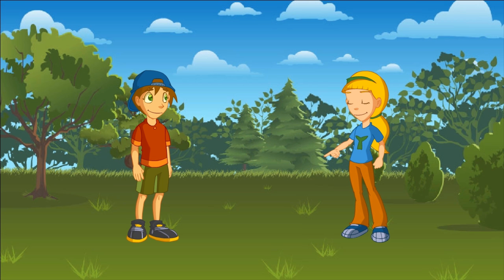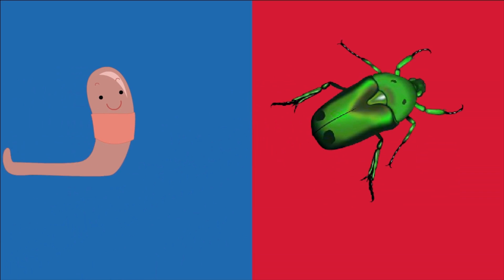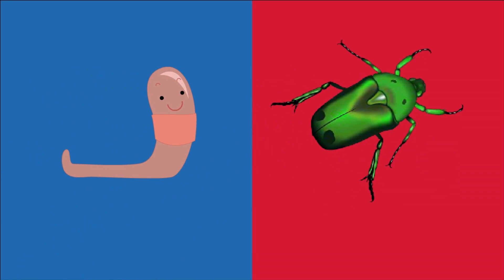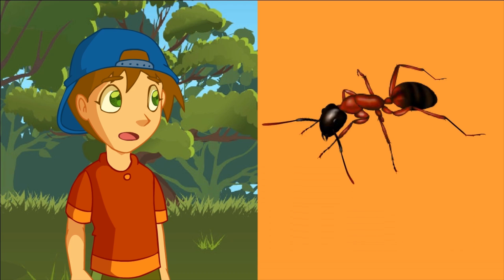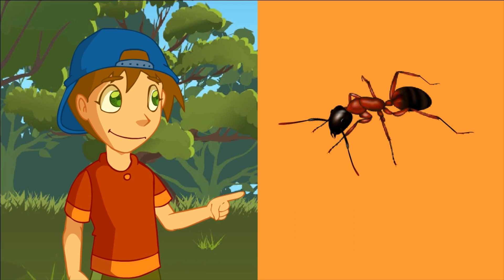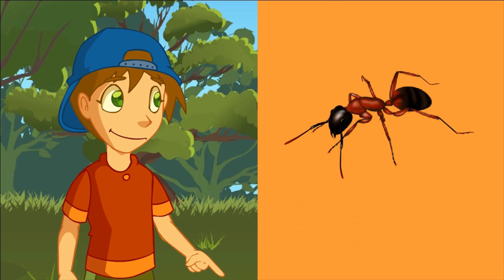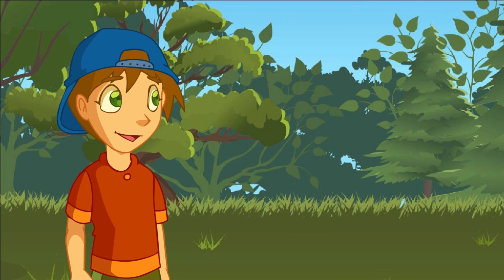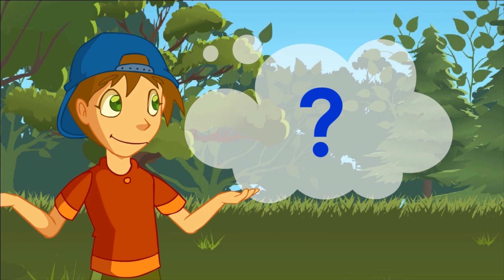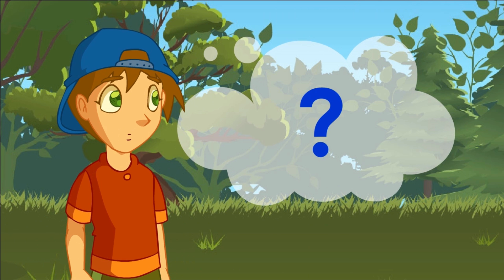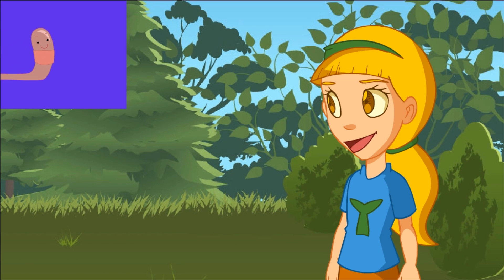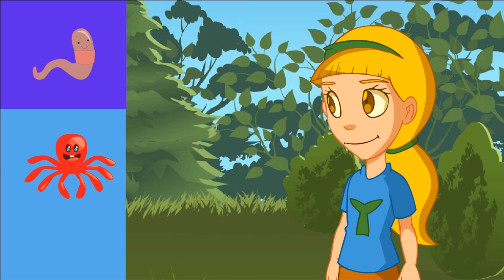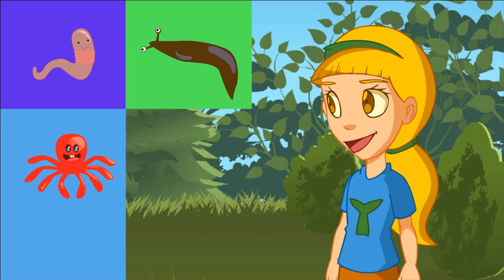Among those which haven't got vertebras — that is, the invertebrates — there are animals with a hard skeleton and others without a hard skeleton. Ants like this are an example of invertebrates with a hard skeleton. Examples of invertebrate animals without a hard skeleton include worms, octopus, slugs, and sea anemones.